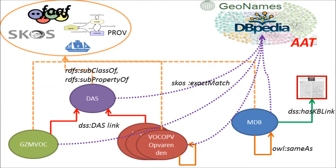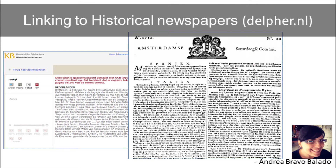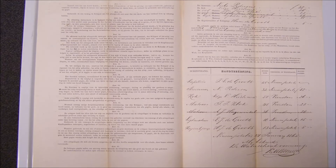What we also did is link these together, so ship names, place names, etc. We also linked to the open newspaper archives made available by the Royal Library of the Netherlands, and we included provenance information about where this information comes from. For a number of data sets we link back to the original scans of the archival records as they are found in the archives themselves.